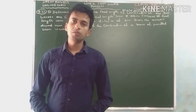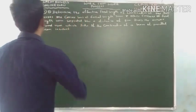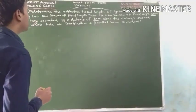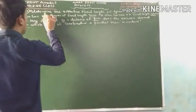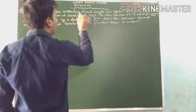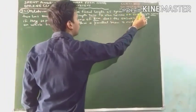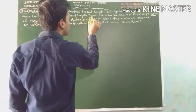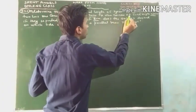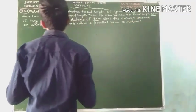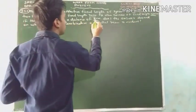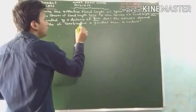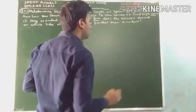Let's start to solve the next question of this chapter — question number 9.21. We will solve the first part of this question: Determine the effective focal length of a system combining two lenses — one convex of focal length 30 cm and one concave of focal length 20 cm — separated by a distance of 8 cm. Does the answer depend on which side the parallel beam is incident?